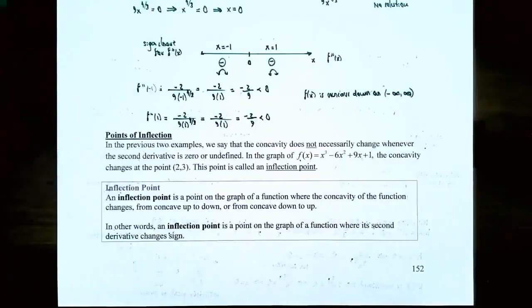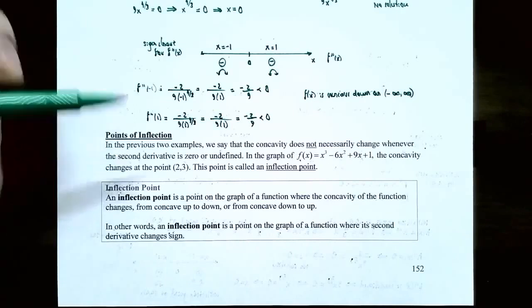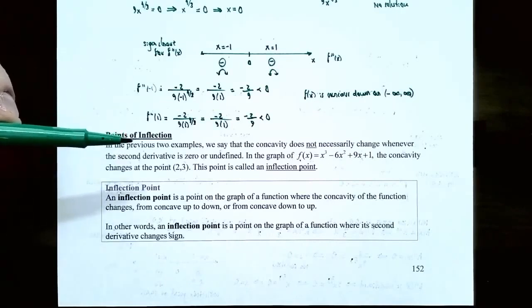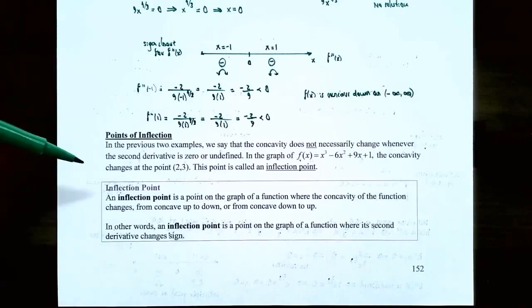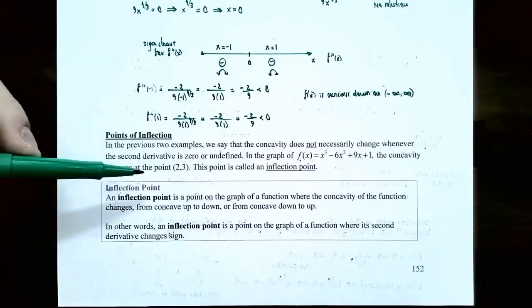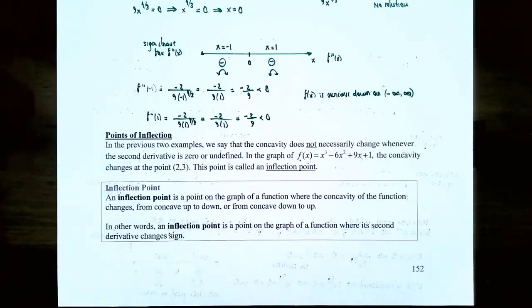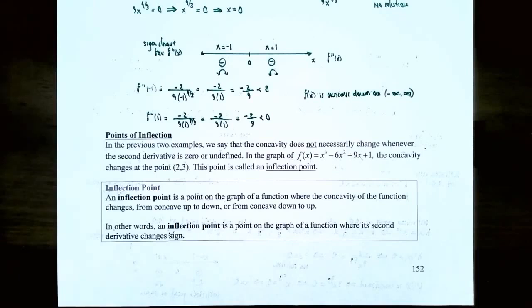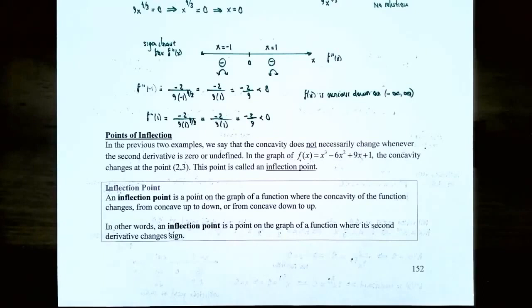We're going to talk about points of inflection or inflection points. In previous examples we looked at concavity and saw that the concavity does not necessarily change when the second derivative is either zero or undefined. In the function f(x) = x³ - 6x² + 9x + 1, the concavity did change at the point (2, 3). This point is called an inflection point. An inflection point is a point on the graph where the concavity changes from concave up to concave down or from concave down to concave up — in other words, where the second derivative changes sign.